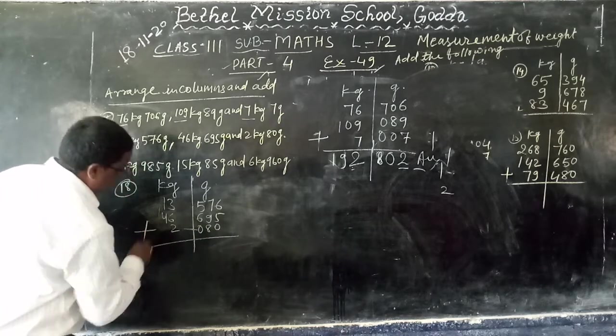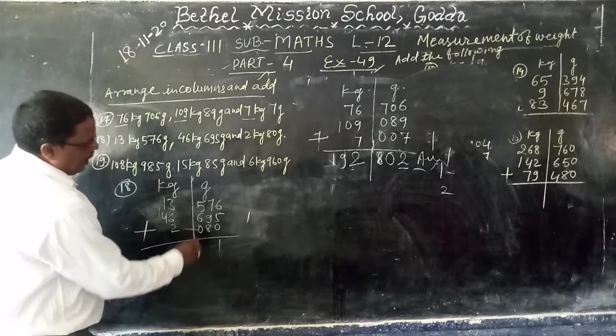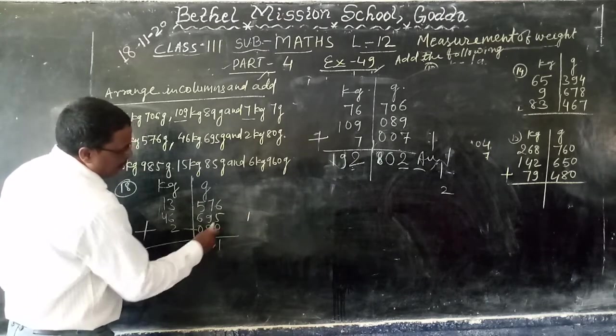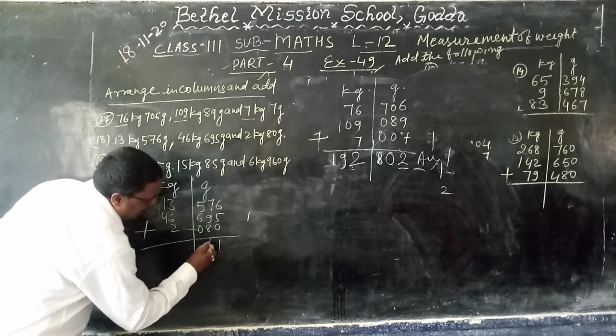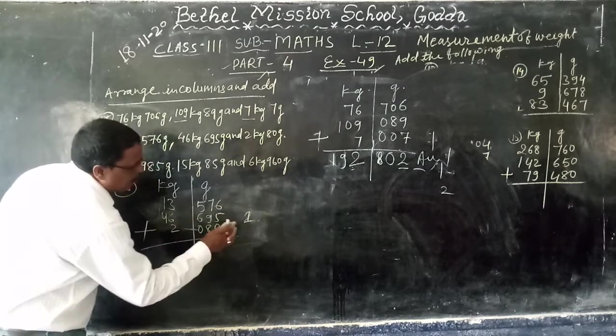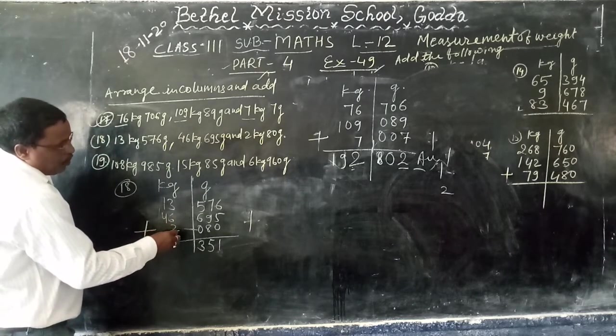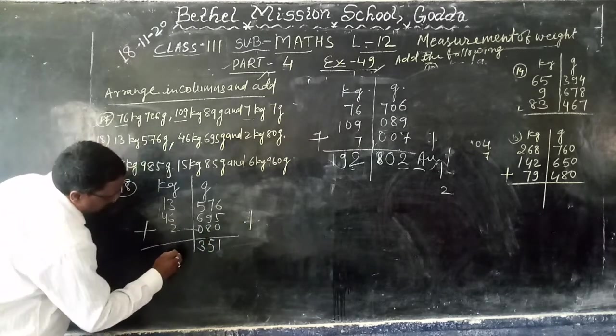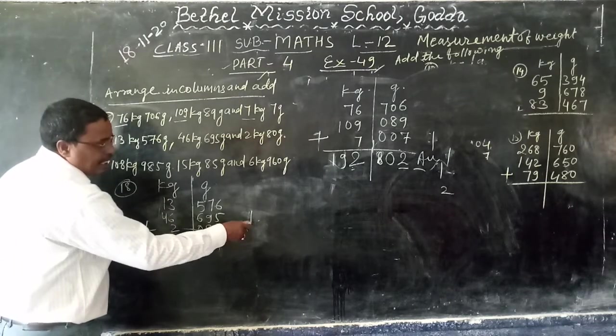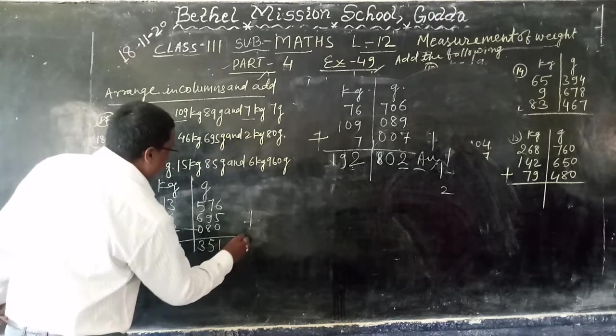6 plus 5, 11, plus 0, 11. 1 in hand. 9 plus 7, 16, plus 8, 24, plus 1, 25. 5 right, 2 in hand. 6 plus 5, 11, plus 2, 13. 3 right, 1 in hand. 6 plus 3, 9, plus 2, 11, plus 1, 12. 2 right, 1 in hand. 4 plus 1, 5, plus 1, 6. 62 kg, 351 gram is the answer.